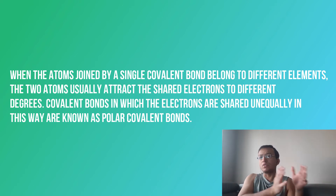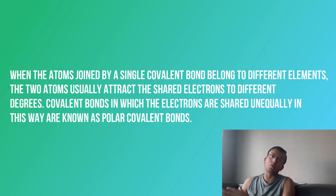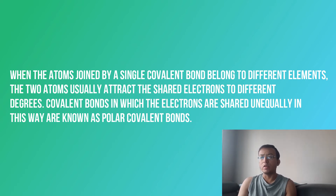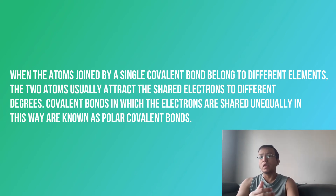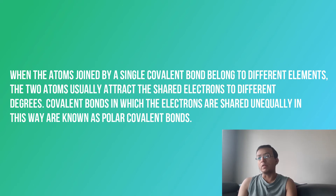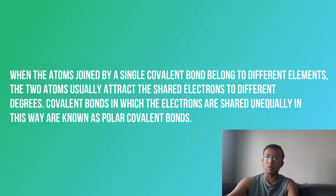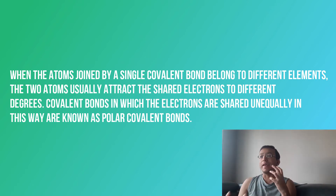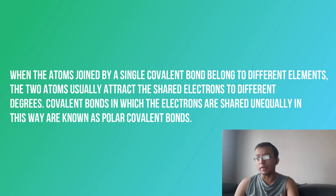In a polar structure, positive charge is concentrated toward one end of the molecule — the positive pole — and negative charge toward the other end — the negative pole. Oxygen and nitrogen attract electrons relatively strongly, whereas hydrogen attracts electrons relatively weakly, due to differences in nuclear charge. Carbon and hydrogen attract electrons more equally, so the bond between carbon and hydrogen is relatively non-polar.